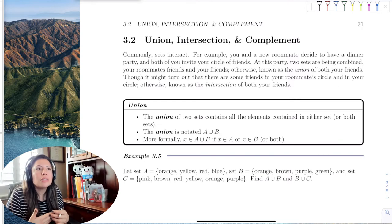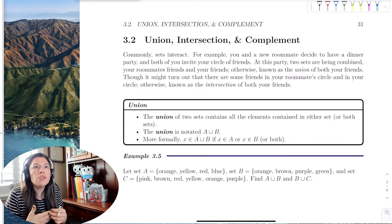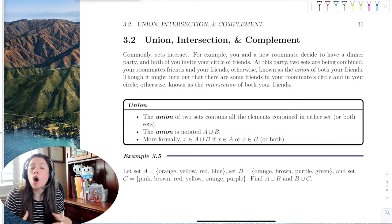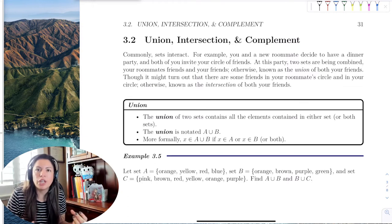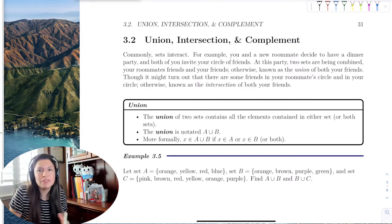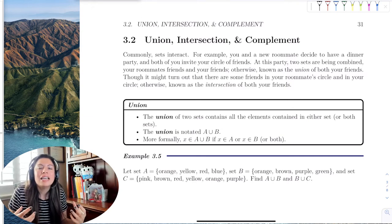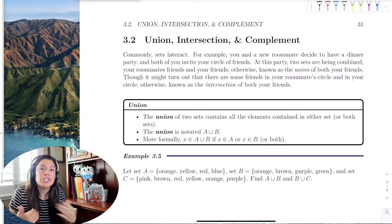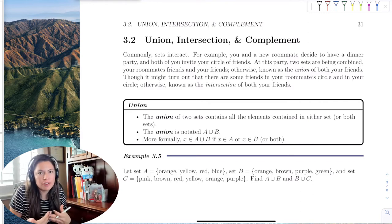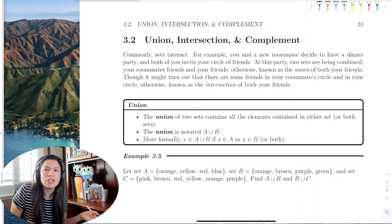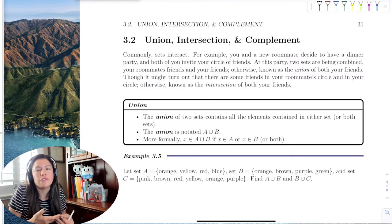So all your friends that come and sit down and have dinner — all of them, regardless of whether they know each other — that's called the union of your friends. That's the union set. The ones that you both know, the friends who know both of you, that's your common friends. That's the intersection of your circle of friends.